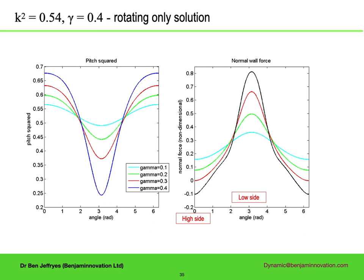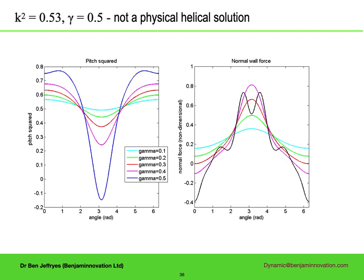Gamma of 0.4, for which now the normal side force goes negative. So this could be stabilized by rotation. Finally, a non-physical solution with a gamma of 0.5. Everything converges, but the pitch squared goes negative. So the actual physical solution is only over a range of theta for which the pitch squared is positive. So this is not a helix. Negative normal side force as well. So I have no idea if this corresponds to any kind of physical solution.